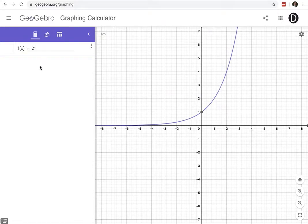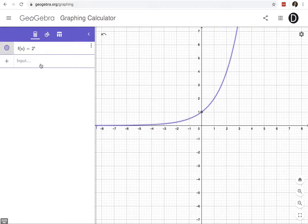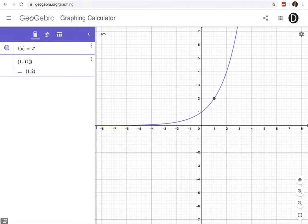It's a nice geometric growth. I'm interested in the point at x equals 1, so let's create a point: 1 comma f of 1. And so I have a point here.